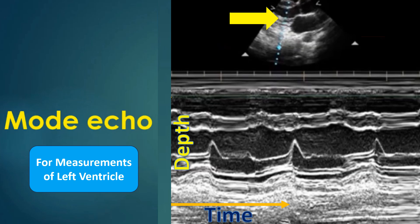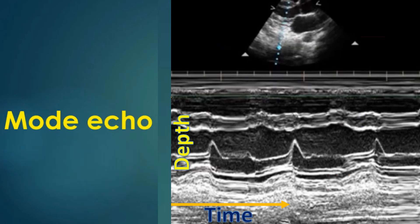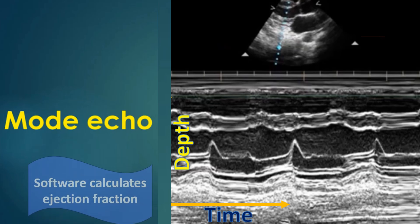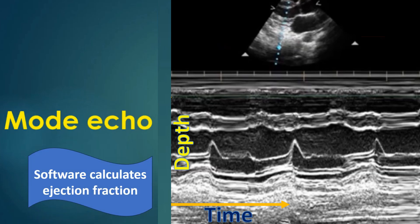The interventricular septum moves downwards in systole towards the left ventricular cavity. The left ventricular posterior wall moves anteriorly towards the left ventricular cavity in systole. The systolic and diastolic measurements are taken using computerized calipers in the echocardiograph and the software package calculates the dimensions and ejection fraction.